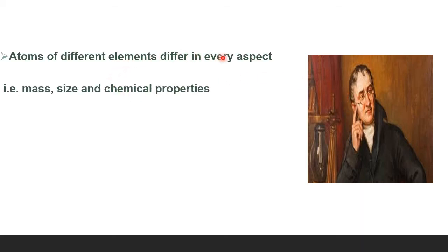Atoms of different elements differ in every aspect. That is, mass, size and chemical properties. Naturally, atoms of different elements, copper element, gold element, copper atom, gold atom, naturally they are different. If in copper, what all atoms are there, they are same. In gold, atoms are there, they are same. But atom of gold, atom of copper, they are not same. They are different. So atoms of different elements are different only. Whether it is mass or size or property, they have to be different.